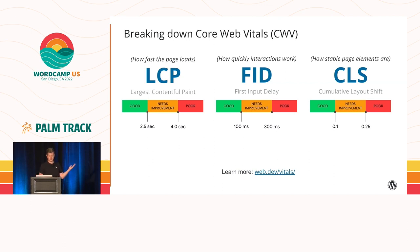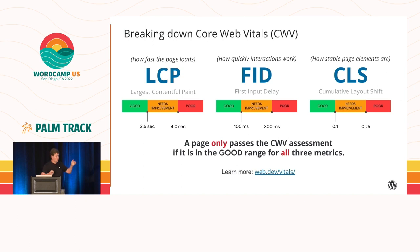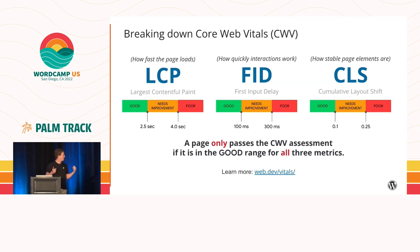Each of these metrics has thresholds defined for which values are considered good or poor, but there's also the overall Core Web Vitals assessment. A site only passes the overall Core Web Vitals assessment if all three values are good. So you can't just have a fast-loading website to get good Core Web Vitals — it has to be good across all three to have great performance and a great user experience.